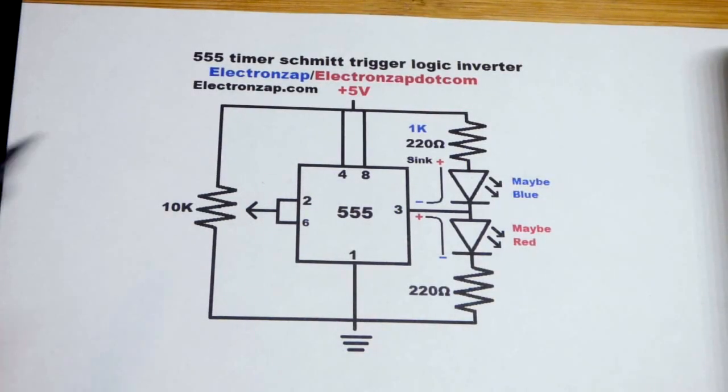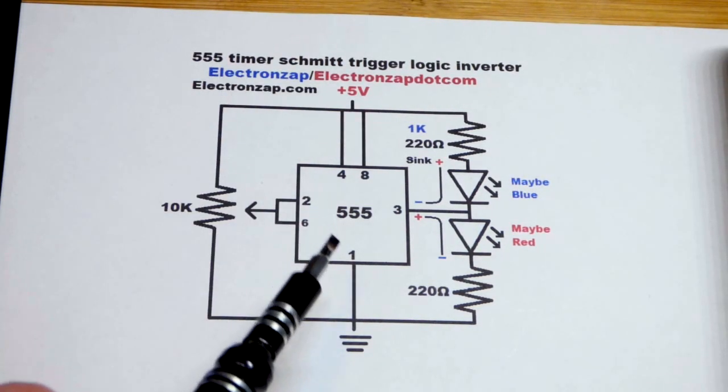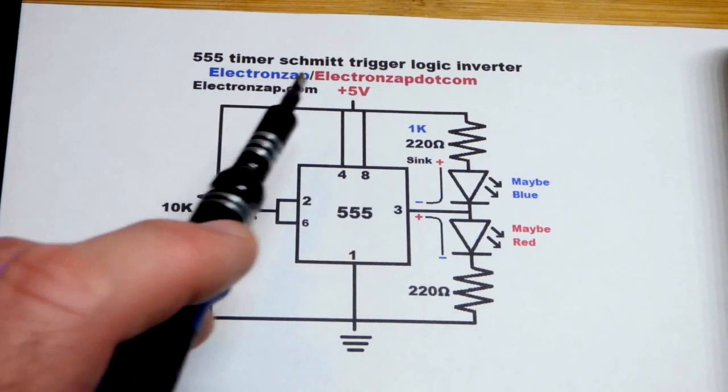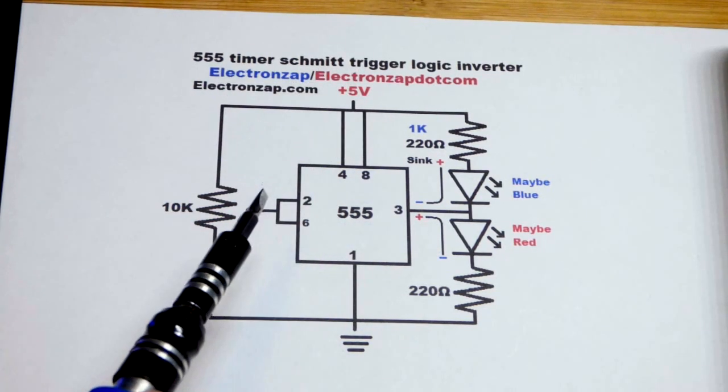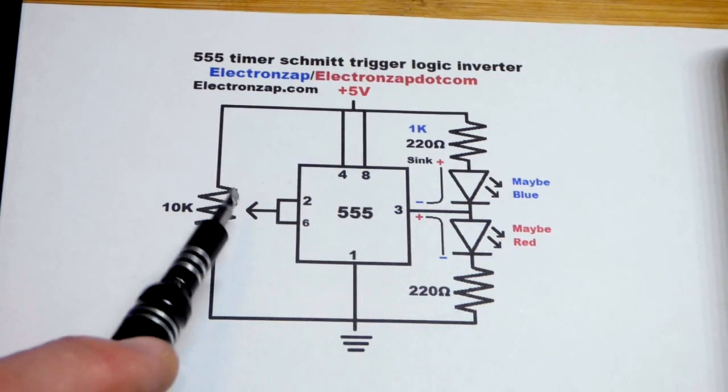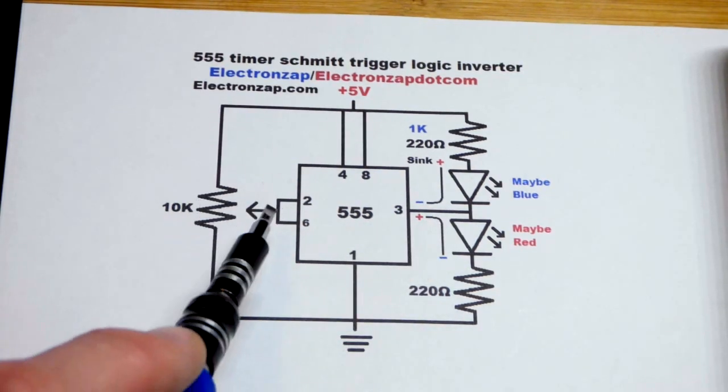Now for the first 555 timer circuit I'm going to use, that's an integrated circuit, we'll look at that in more detail coming up. We're going to make a Schmitt trigger. So what that means is the output changes based on the voltage that we input.